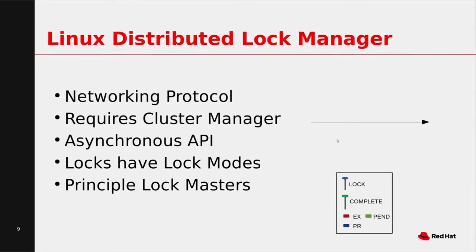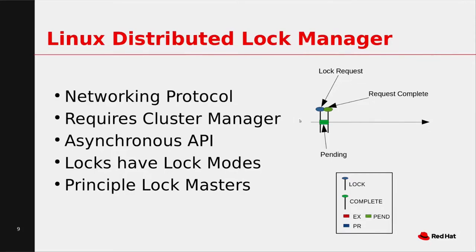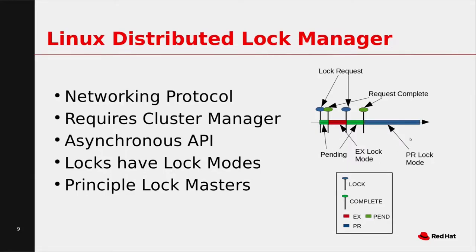With the asynchronous lock API, we have a timeline. We make a lock request shown as a pin needle, then enter a pending state, then get a completion handler telling us the lock request is complete. The lock request doesn't block. Then we're in our specific lock mode — in this case, exclusive, the writer's lock — and we can make another lock request, again going pending and getting a completion handler, then for example entering a read lock.